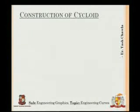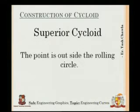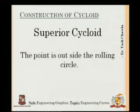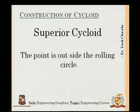So we come to the end of cycloid and move to the next curve: the superior cycloid. We have a simple cycloid; now what is the difference between a simple cycloid and a superior cycloid? The point which was on the circle will now be outside the rolling circle. Say, right now you are standing at the wall of the room — now you have gone outside the room. That's what the point has done: first it was on the circle, now it has gone outside the circle.